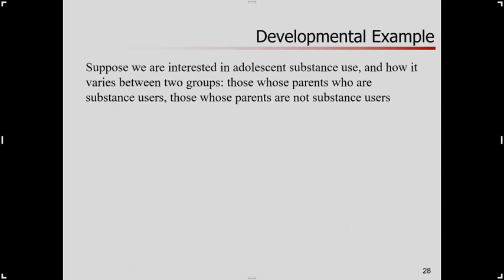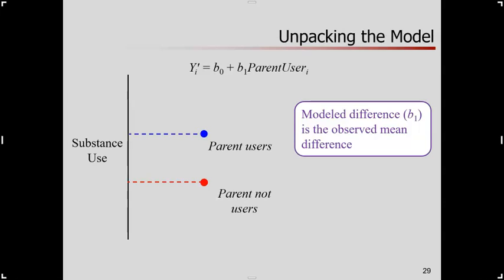Let me give you another example, and we're going to look at this visually. Suppose we're interested in adolescent substance use and how it varies between two groups — adolescents whose parents are substance users, and those whose parents are not. Here's a model where how much the adolescent uses substances is predicted by whether or not their parent is a user. I might expect a story like this: the group whose parents are substance users tends to be higher on average than the group whose parents are not. In this case, the model difference is just the observed mean difference — there are no other variables taken into account.